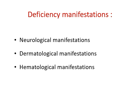Now regarding the deficiency of pyridoxal phosphate — since pyridoxin occurs in almost all foods, dietary deficiency of vitamin B6 is rare. However, if deficiency does occur, the main clinical symptoms include neurological manifestations, dermatological manifestations, and hematological manifestations.